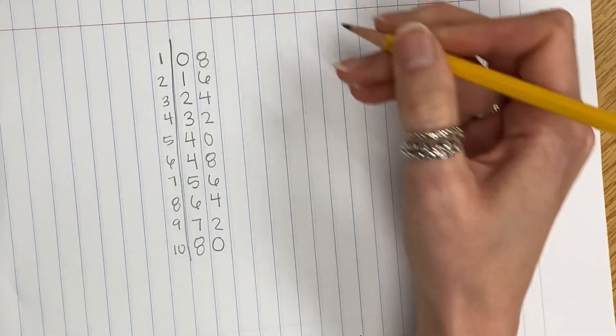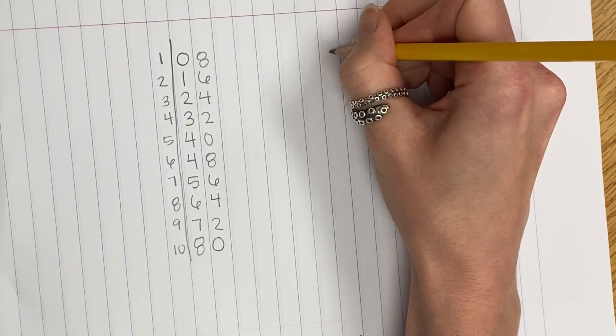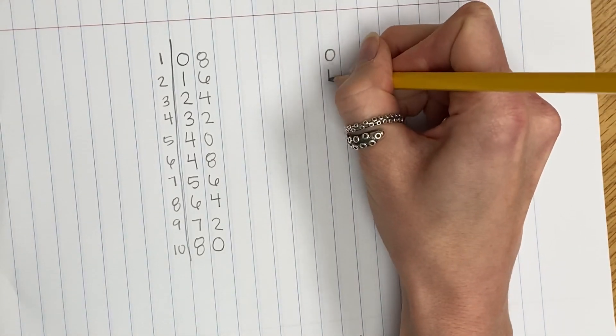We have a very similar trick for the nines. We're going to start with zero and number through nine.